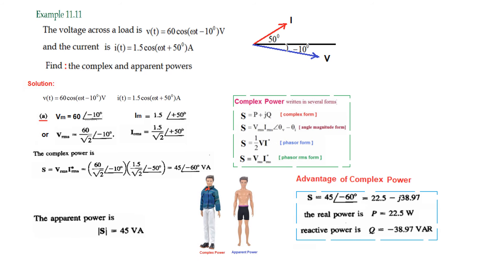One advantage of complex power is that converting from polar to rectangular directly gives us both components: the real part is the real (true) power in watts, and the imaginary part — here 38.97 — is the reactive power in VAR. Rather than calculating P and Q separately and then combining them, calculating S first and decomposing it is much easier.